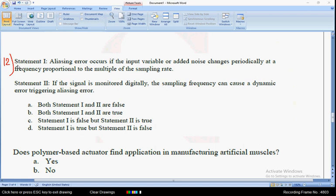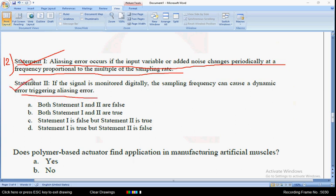For the twelfth question: Statement 1: aliasing error occurs if the input variable or added noise changes periodically at a frequency proportional to the multiple of the sampling rate. The statement is correct. And the second one: if the signal is monitored digitally, the sampling frequency can cause a dynamic range error. This is also correct. So for the twelfth question, both statements one and two are true, so mark option B.